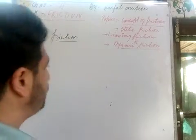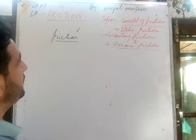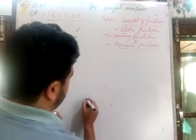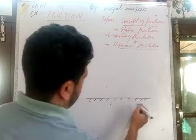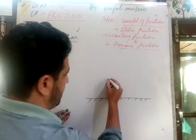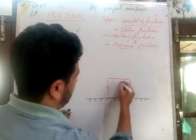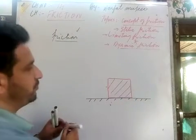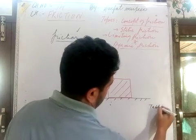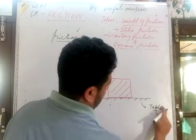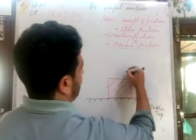With the help of a diagram, I will try to explain the concept of friction. Say this is a table top, and on this table top there is a body — it is a heavy box placed on the surface of the table top. This box has weight, and due to the weight it exerts a downward force.